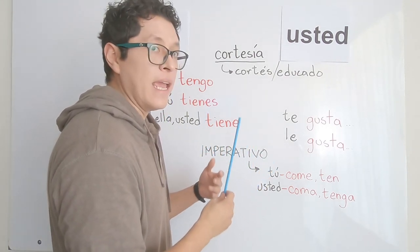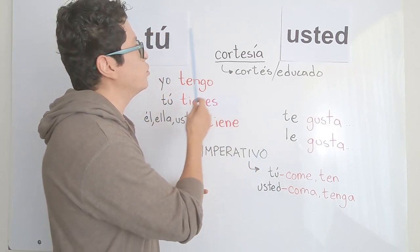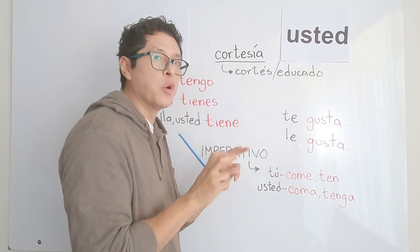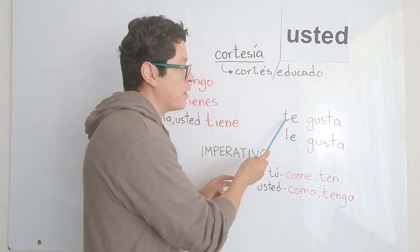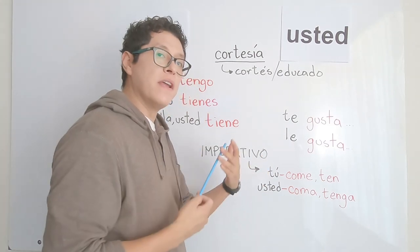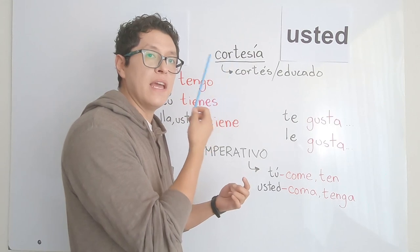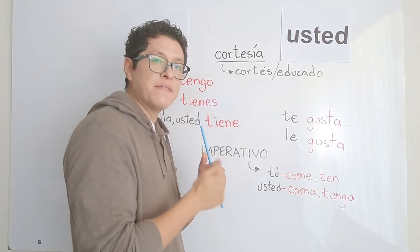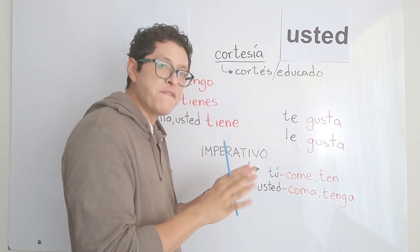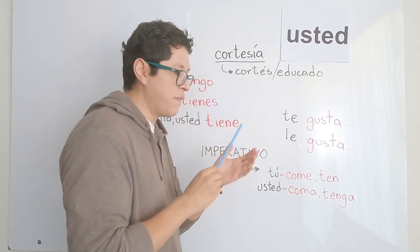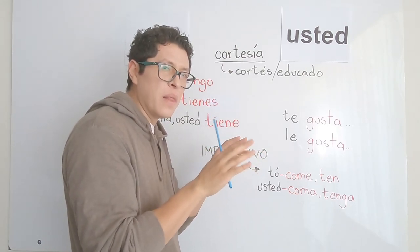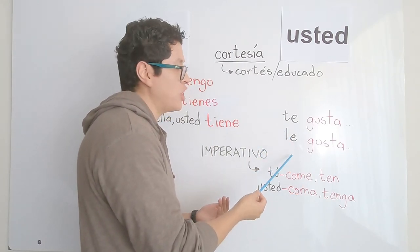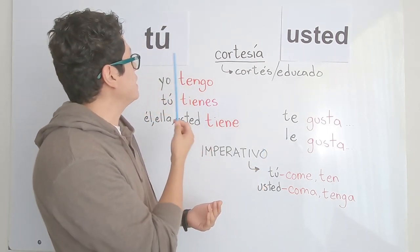The second grammar implication when using tú or usted involves gustar verbs — I call them 'liking verbs.' These verbs use a different pronoun. They are different from reflexive verbs. You have to change the pronoun into the corresponding form depending on whether you're using tú or usted. For tú, you use te; for usted, you use le. You always need to change accordingly.